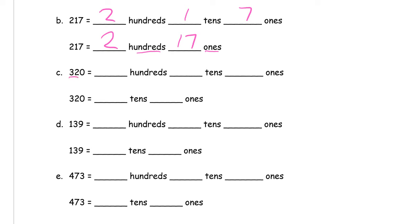320. If we could use all the different place values, we could use three hundreds and two tens and we wouldn't need any ones.